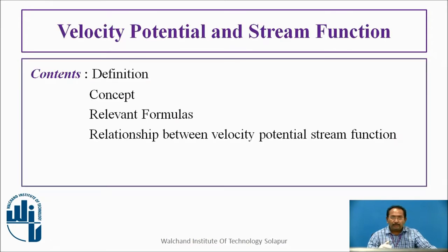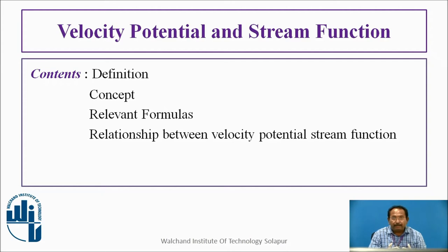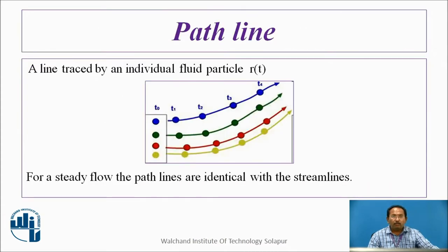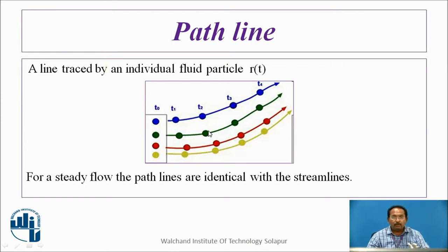In this, we are going to see the definition, what is the concept, the relevant formulas, and what is the relationship between velocity potential and stream function. I will also give you the orthogonal relationship — the multiplication of the slopes of these two curves gives minus one. We will also see what is the path line, stream line, streak line, stream tube, and equipotential lines.